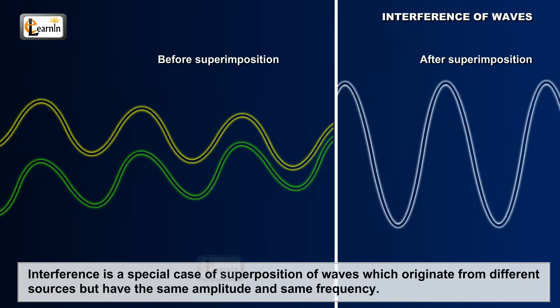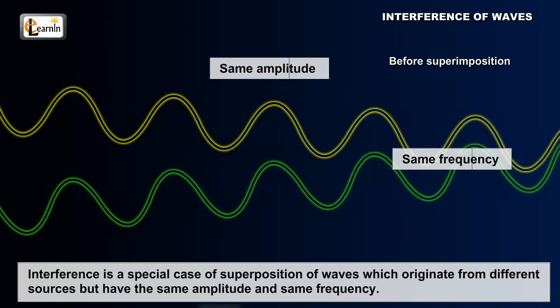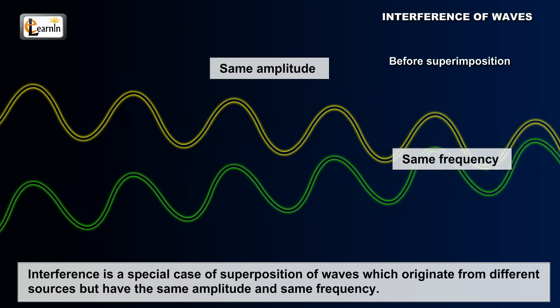Interference is a special case of superposition of waves, which originate from different sources at the same time, and the same frequency.